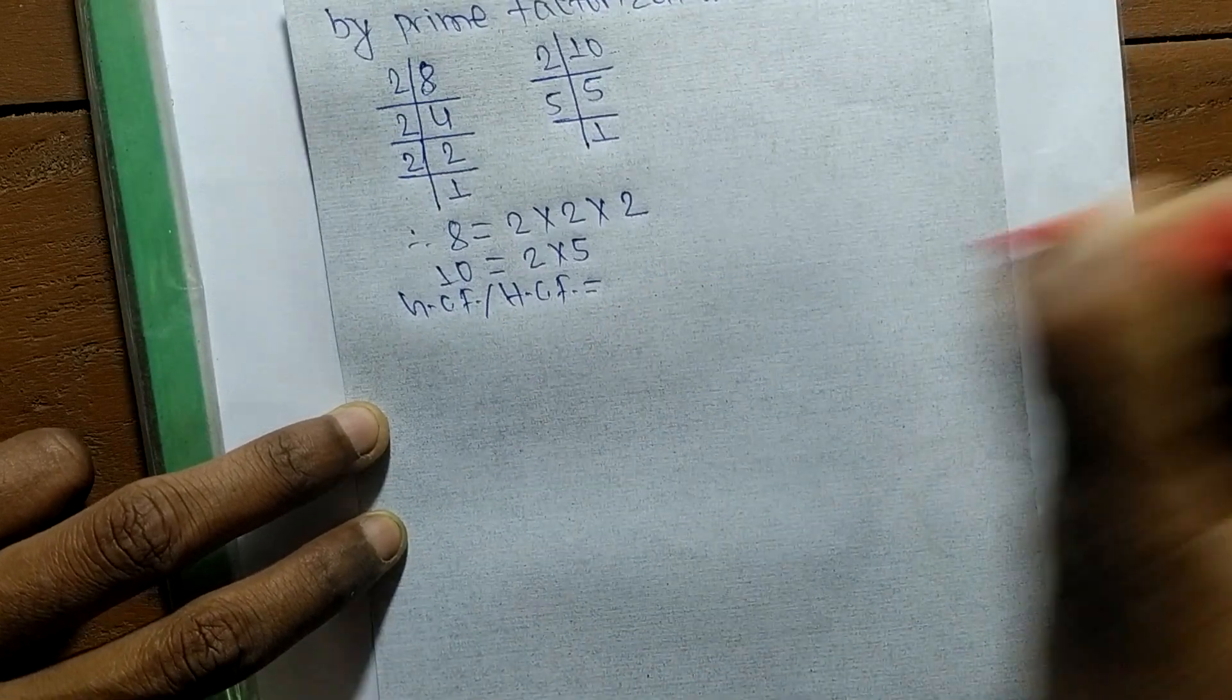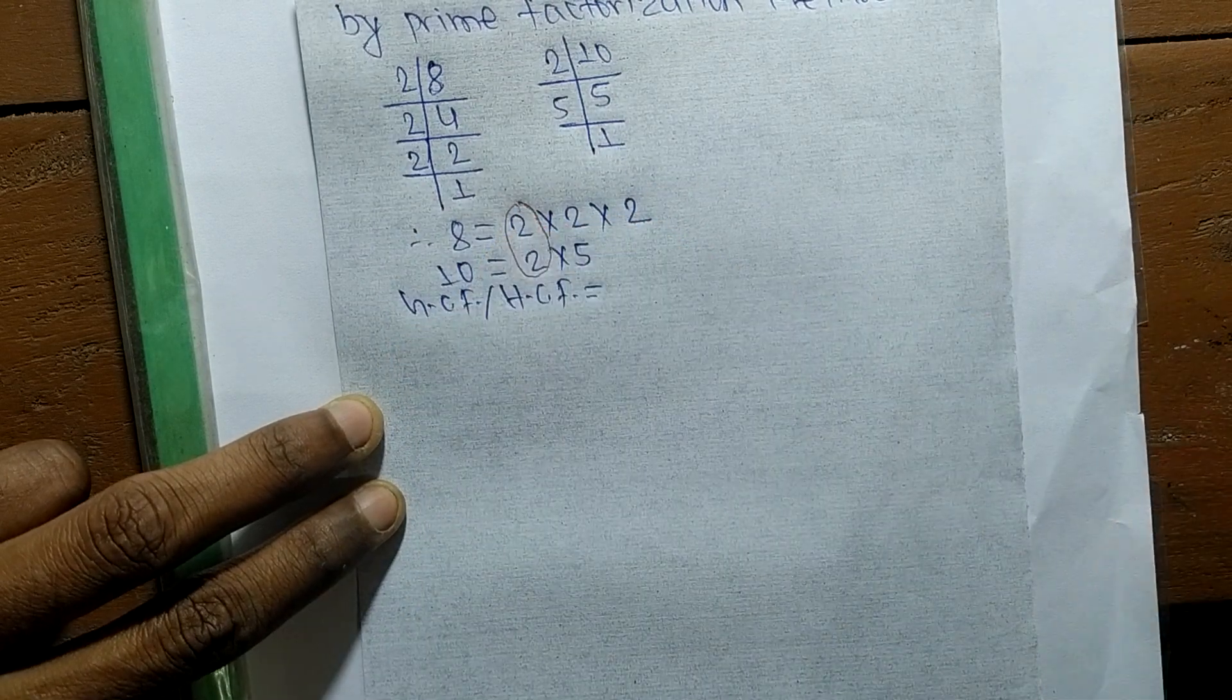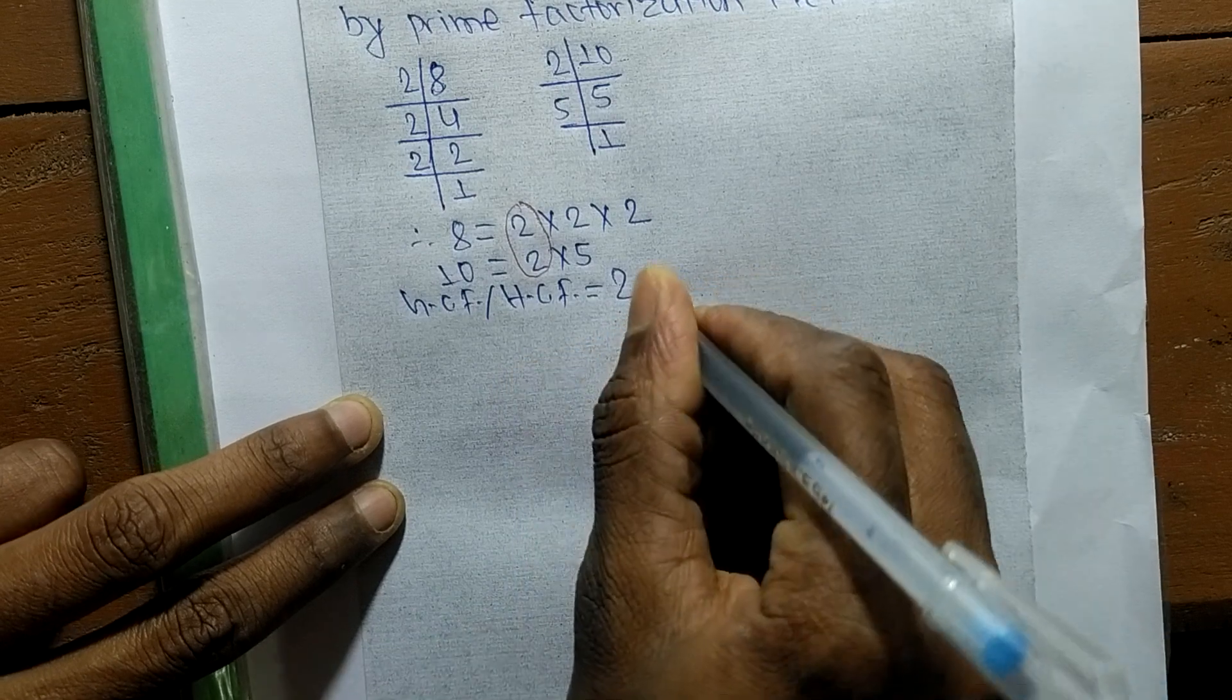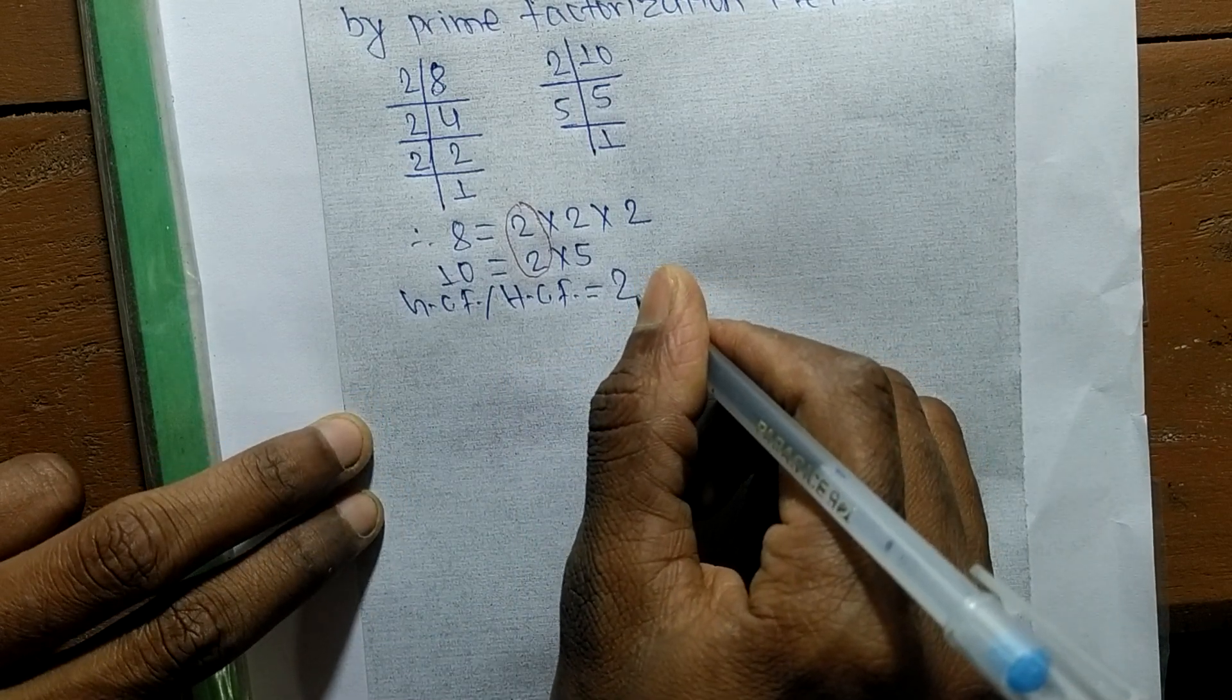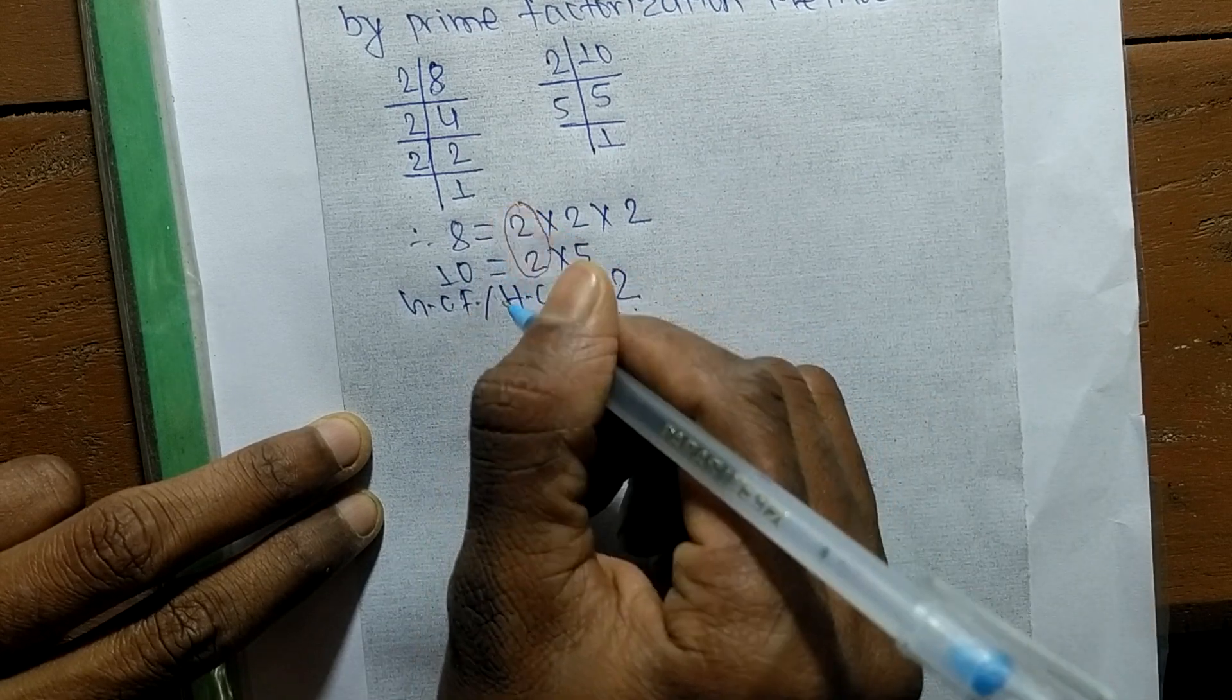common factor in all these prime factors. The common factor here is 2, so GCD or HCF equals 2. This means 2 is the only common factor, so the GCD or HCF of 8 and 10 is 2.